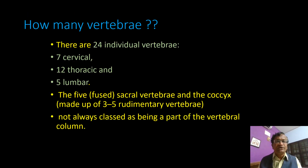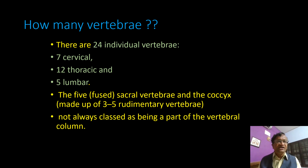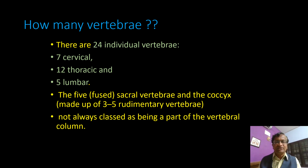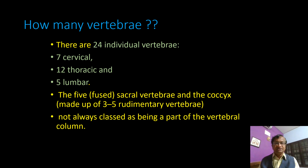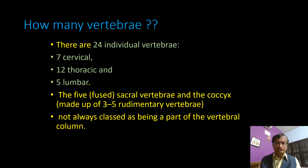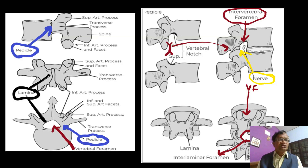How many vertebrae are there? There are 24 individual vertebrae: seven cervical, twelve thoracic, five lumbar, and five fused sacral vertebrae, plus the coccyx made of three to five rudimentary vertebrae, not always classed as being part of the vertebral column.